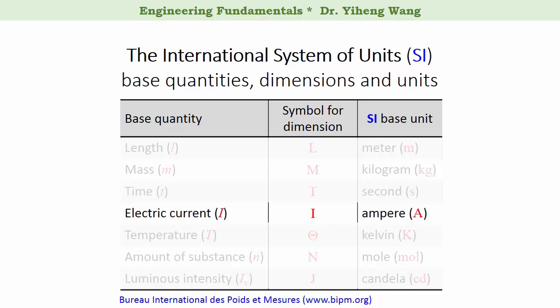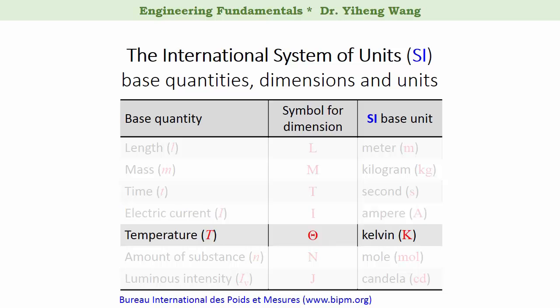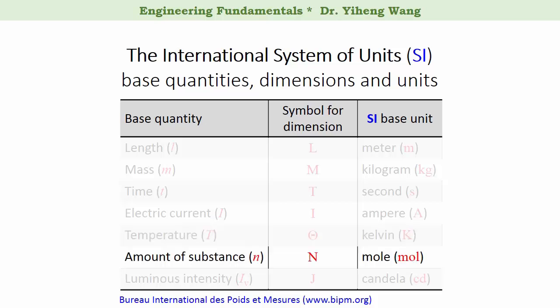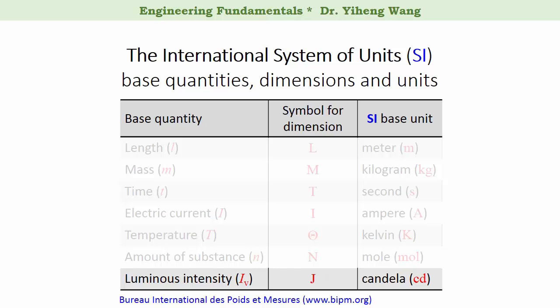Then we have the quantity electric current. The symbol for the dimension of current is capital I, and the SI base unit is ampere. The next base quantity is temperature. The symbol for the dimension temperature is capital Greek letter theta, and the SI base unit is kelvin. The next base quantity is the amount of substance. The symbol for the dimension is capital N, and its SI base unit is mole. The last one is luminous intensity. The symbol for the dimension is capital J, and its SI base unit is candela.